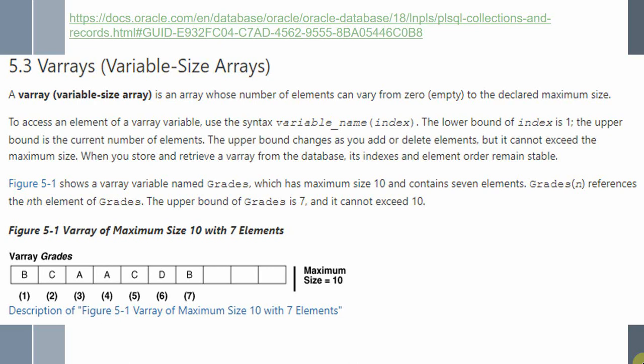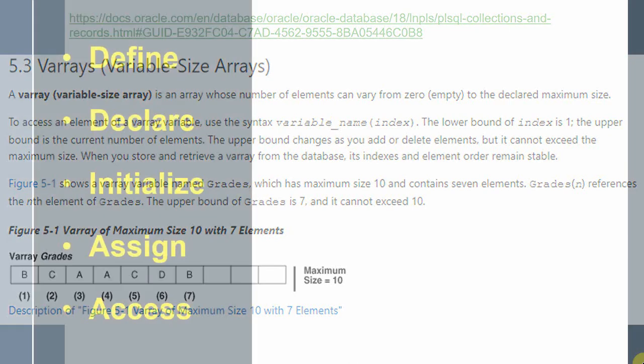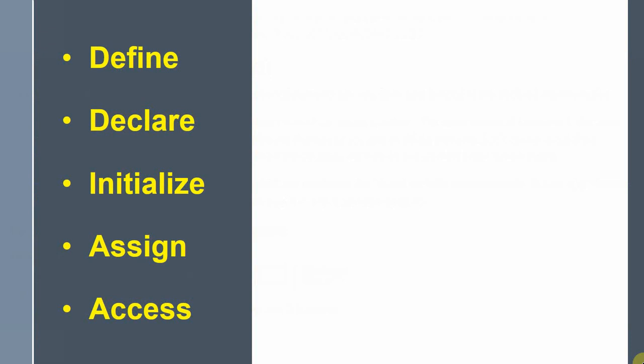We will understand more detail in the upcoming slides with examples. To use a varray, you need to follow a few steps in exactly the same order. First, we define the varray data type because it is a user-defined data type. For example, you might want to store a list of names or a list of dates — it is completely user-defined based on your needs.